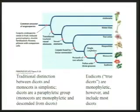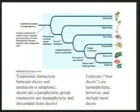Among living angiosperms there's been a big change in understanding. There's been a traditional distinction between dicots and monocots — those terms refer to the number of embryonic leaves in the seed. Dicots have two cotyledons; monocots have one embryonic leaf. But it turns out that's simplistic, because the monocots are a monophyletic group while the things we call dicots are paraphyletic — the monocots are nested within them. So two cotyledons is a primitive feature in flowering plants, and there's been a reduction to one embryonic leaf in monocots.